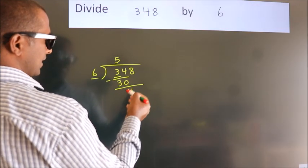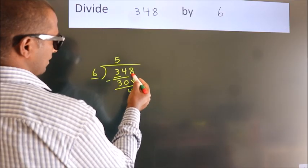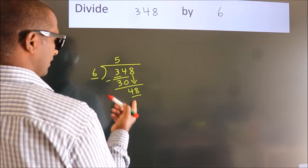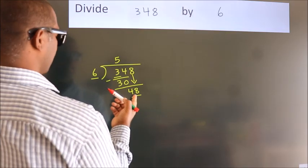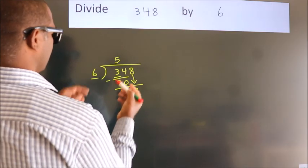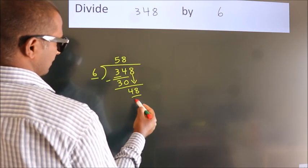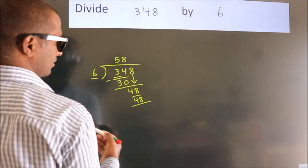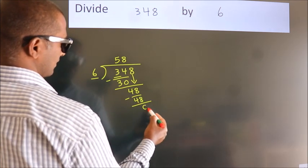After this, bring down the beside number. So 8 down. So 48. When do we get 48? In the sixth table, 6 eights, 48. Now we subtract. We get 0.